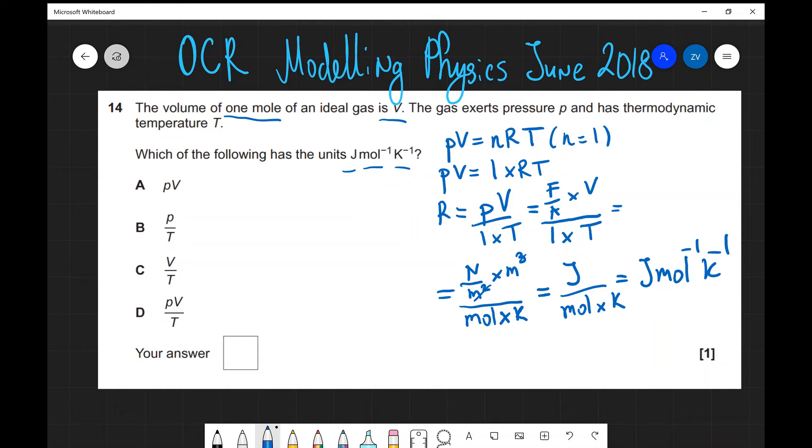So this is equal to a joule divided by a mole times Kelvin. In this case, the correct answer is going to be D, because this PV over T is actually equivalent to what we have on this step over here.